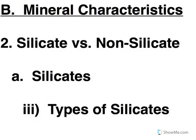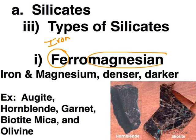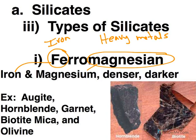Within the silicates we can subdivide based upon composition. The two main categories are going to be ferromagnesian and non-ferromagnesian. Ferromagnesian — Fe is the atomic symbol for iron, and then magnesium — that tells you iron and magnesium are present. These are heavy metals, and so the fact that you've got heavy metals included in your mineral means it's going to have a high density and a dark color.